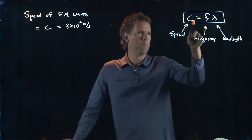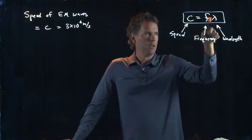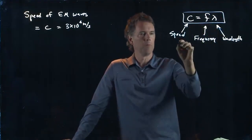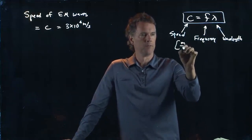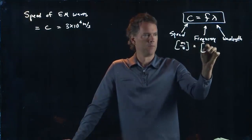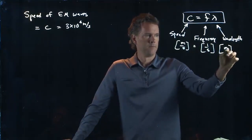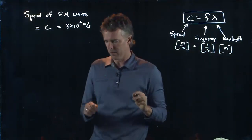So meters per second is F, which is 1 over seconds, times lambda, which is meters. Okay, so that's the relationship that we're dealing with. And now let's think about the full electromagnetic spectrum.